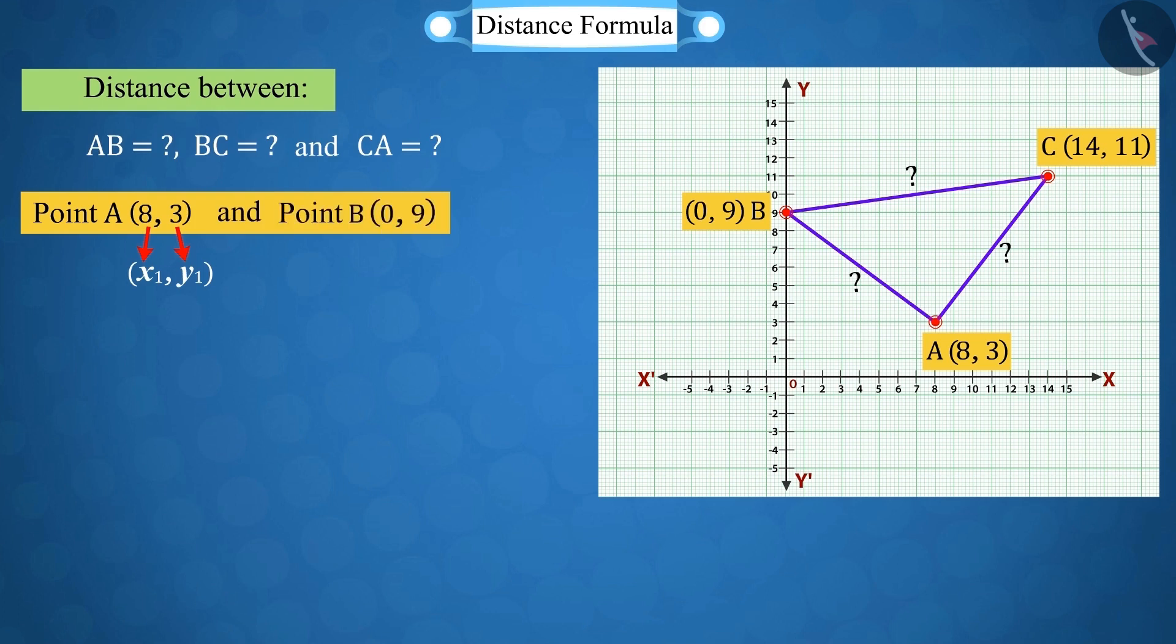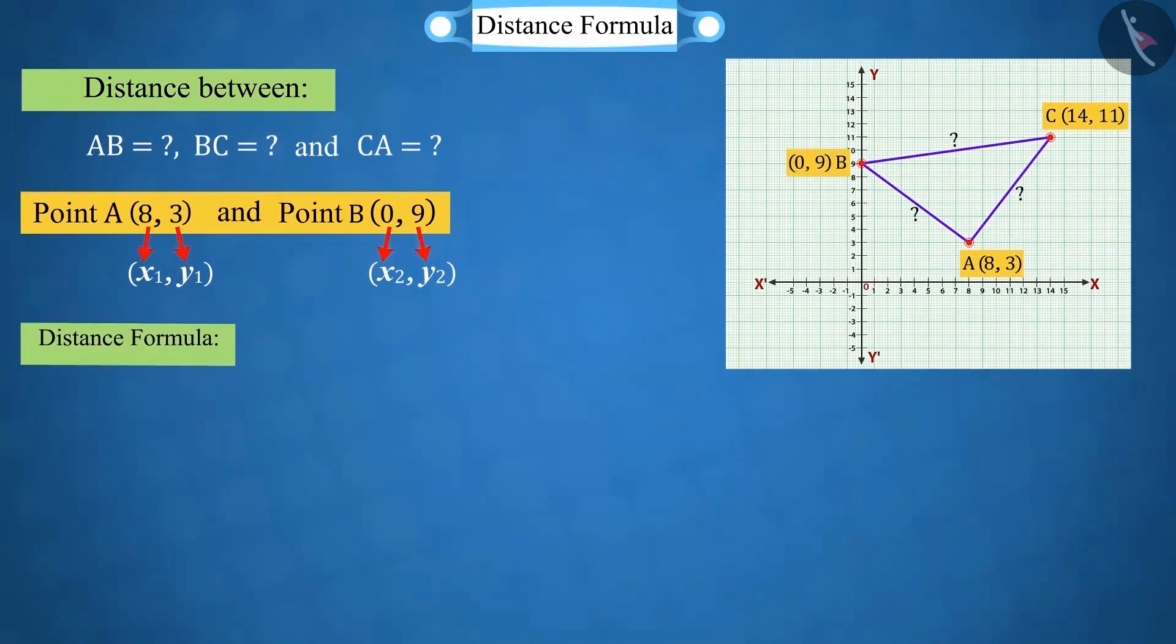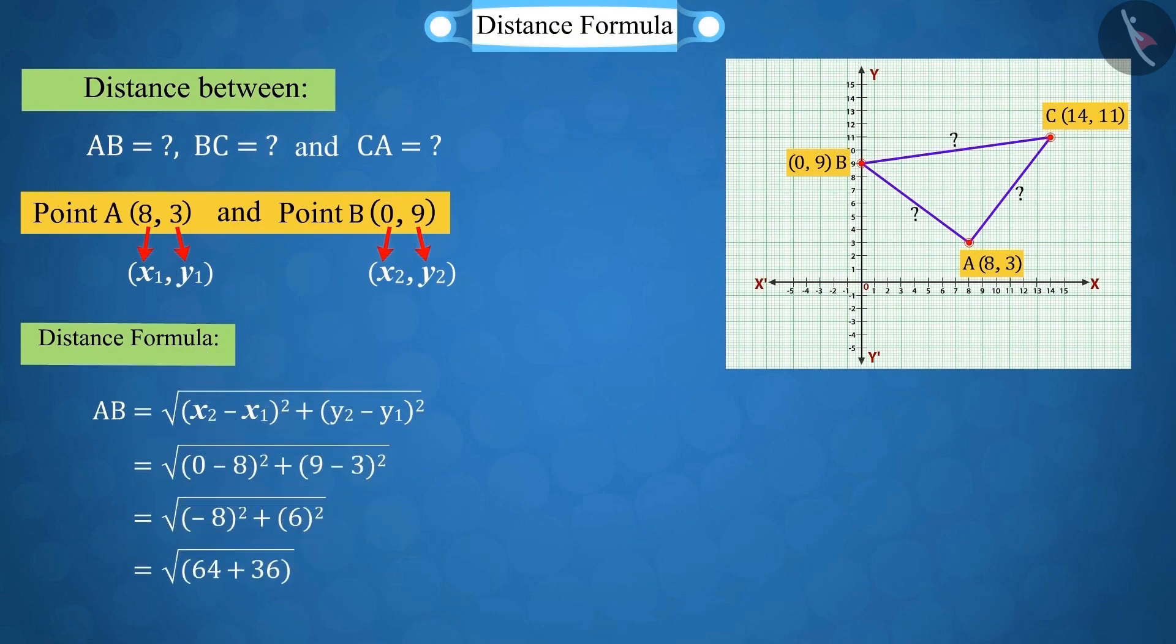And the coordinates of point B are x₂ equal to 0 and y₂ equal to 9. According to the distance formula, we get the value of AB as 10.